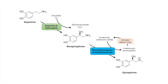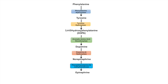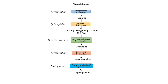Epinephrine is simply norepinephrine with an additional methyl group at the amine group. Here is the entire catecholamine synthesis pathway in a concise format. From phenylalanine to tyrosine: hydroxylation by phenylalanine hydroxylase. Tyrosine to DOPA: hydroxylation by tyrosine hydroxylase. DOPA to dopamine: decarboxylation by aromatic amino acid decarboxylase. Dopamine to norepinephrine: another hydroxylation reaction. And finally, norepinephrine to epinephrine via phenylethanolamine N-methyltransferase — a methylation step.